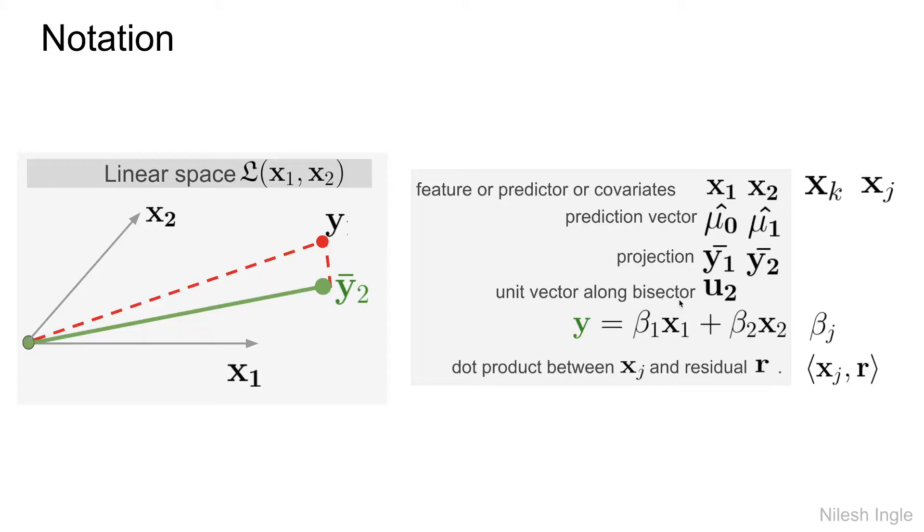Then unit vector along bisector u2. The prediction y is equal to this equation: beta 1 times x1 plus beta 2 times x2. Here, beta 1 and beta 2 are the coefficients, and the generalized term would be beta j. The dot product between xj, which is the predictor or feature, and the residual—residual means the difference between the actual value and the predicted value—is denoted by this expression within the square angle brackets: xj, r.